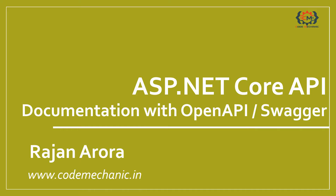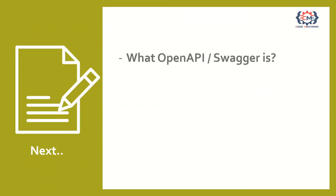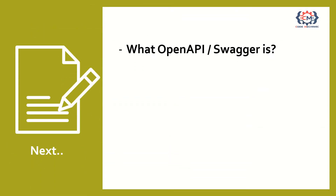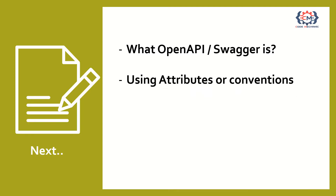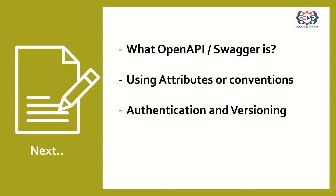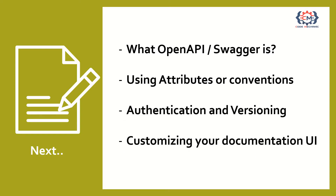In this course, we are going to learn how to document an ASP.NET Core API. Some of the major topics that we will cover include learning what OpenAPI or Swagger is all about and how we can use them for documenting API using attributes or conventions to drive OpenAPI generation, dealing with authentication and versioning and customizing API documentation UI.